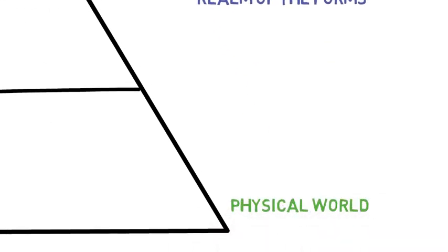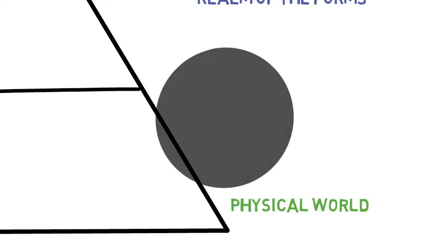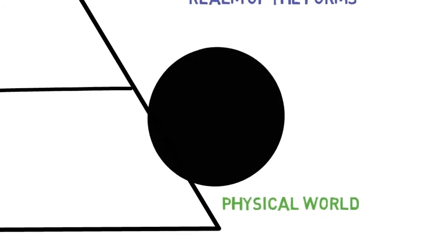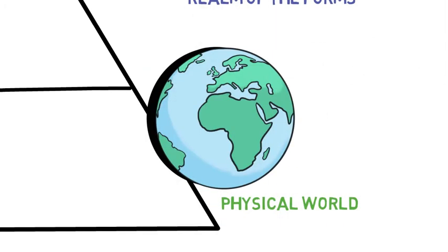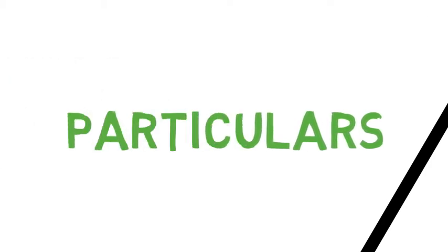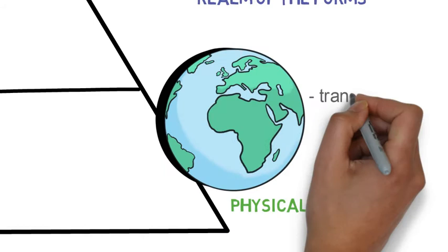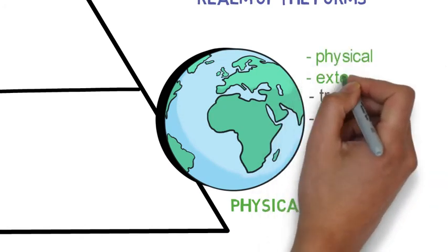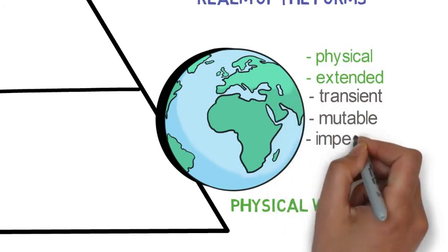The things we experience around us in our physical world are imperfect copies, reflections, or shadows of the forms called particulars. And unlike forms, particulars are finite. They are mutable, so they change, they are extended, they take up space, they are physical, and they are imperfect.